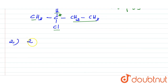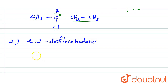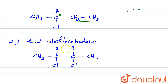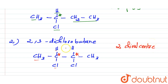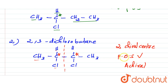The next compound given is 2,3-dichlorobutane. Its structure is CH3-CHCl-CHCl-CH3. This compound has two chiral centers — this carbon is one asymmetric carbon and this carbon is also one asymmetric carbon, meaning four different groups are attached to each of these two carbons. Also, this compound has one plane of symmetry.